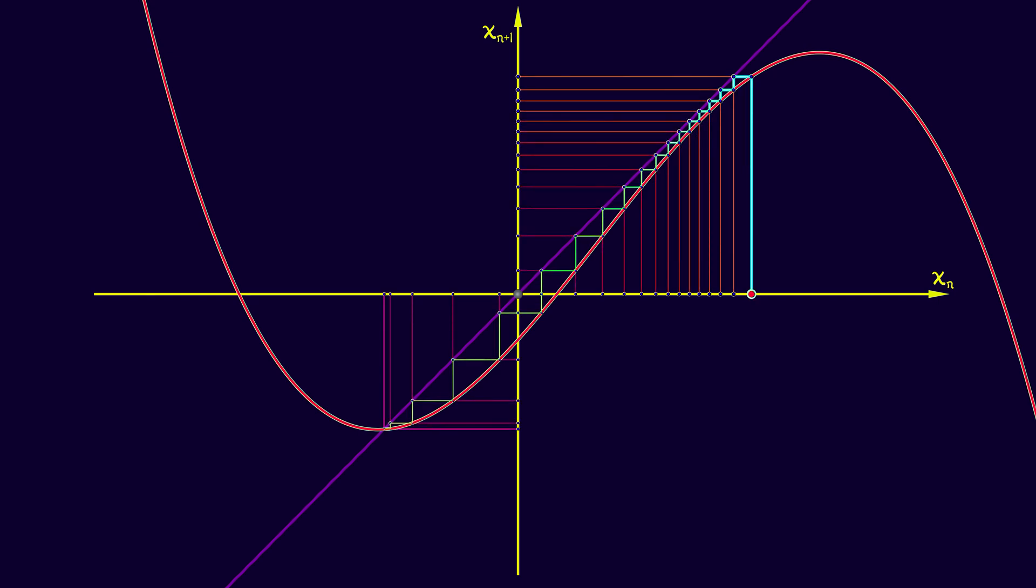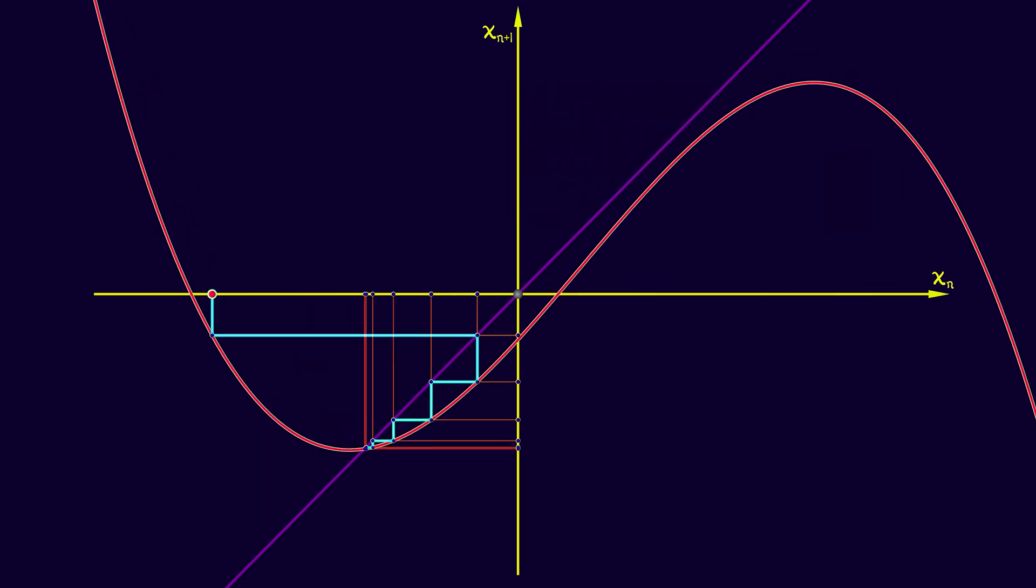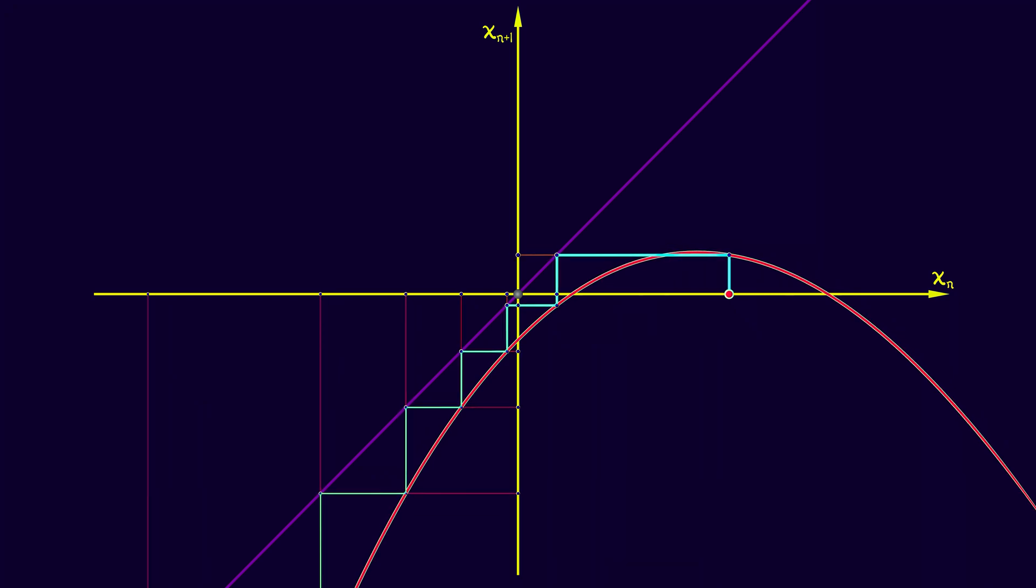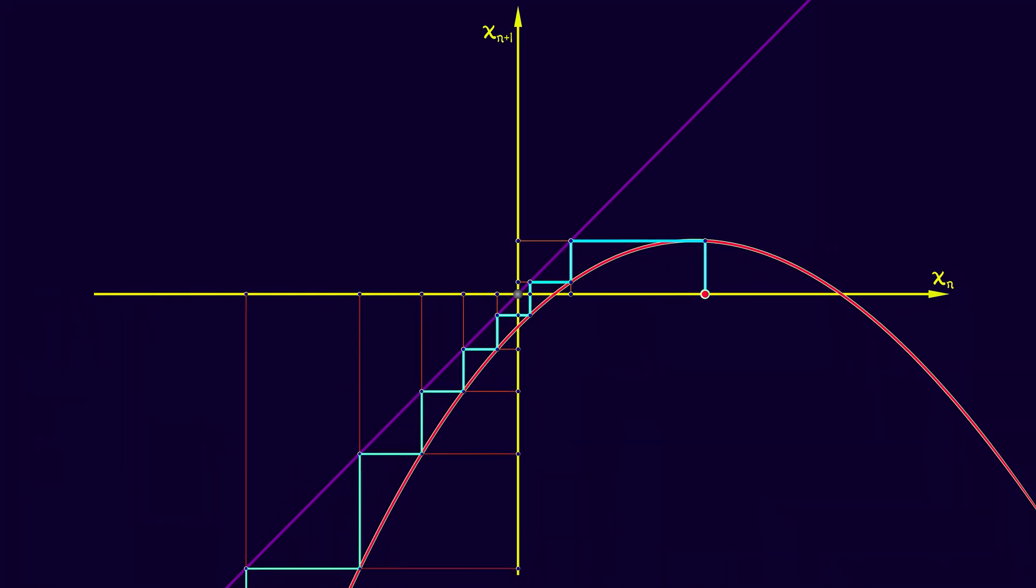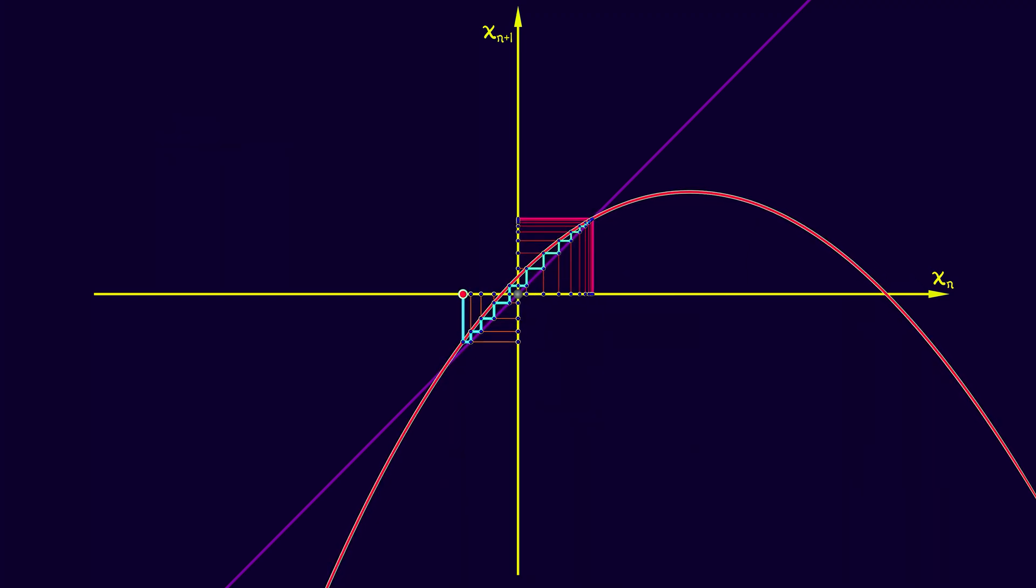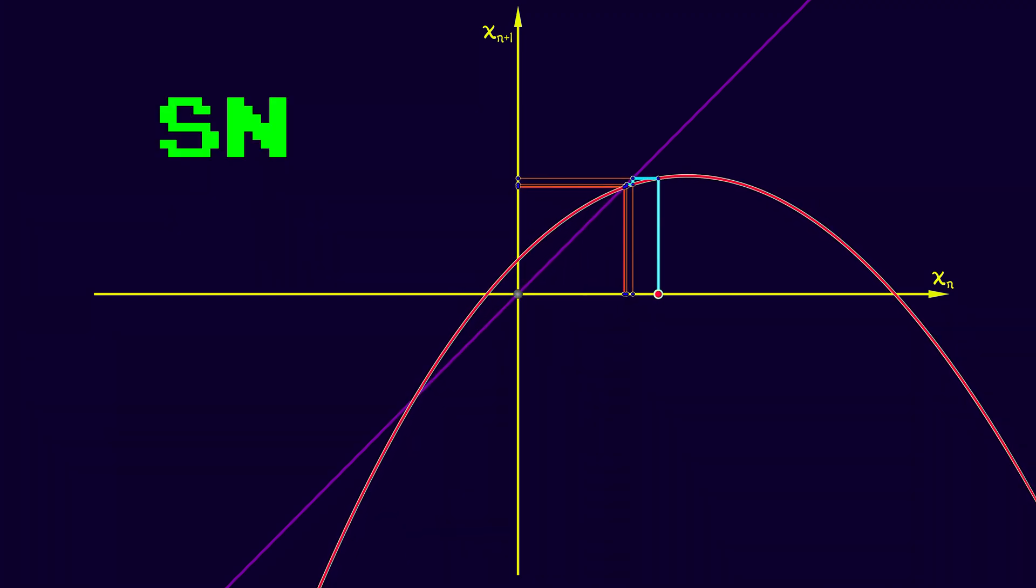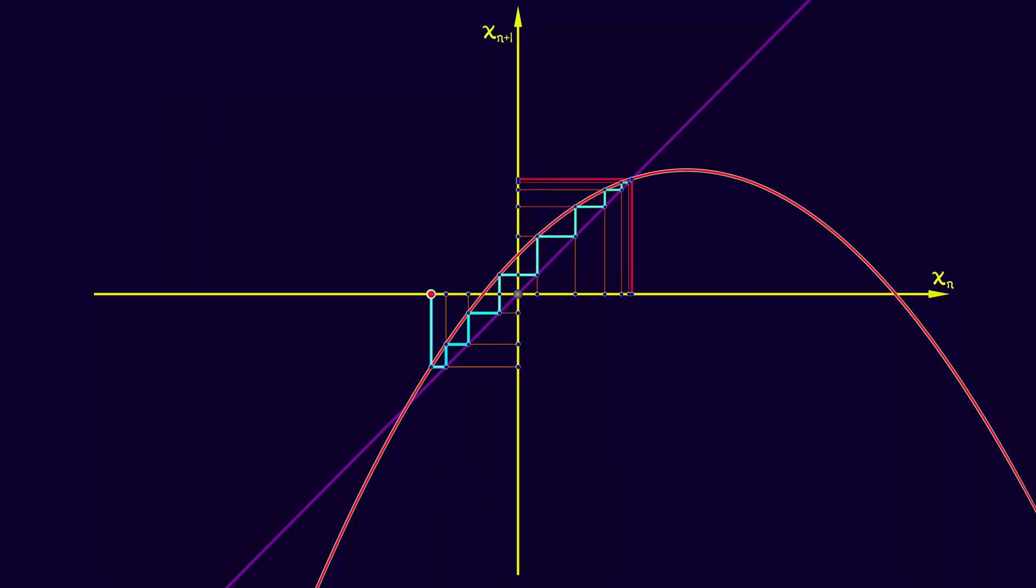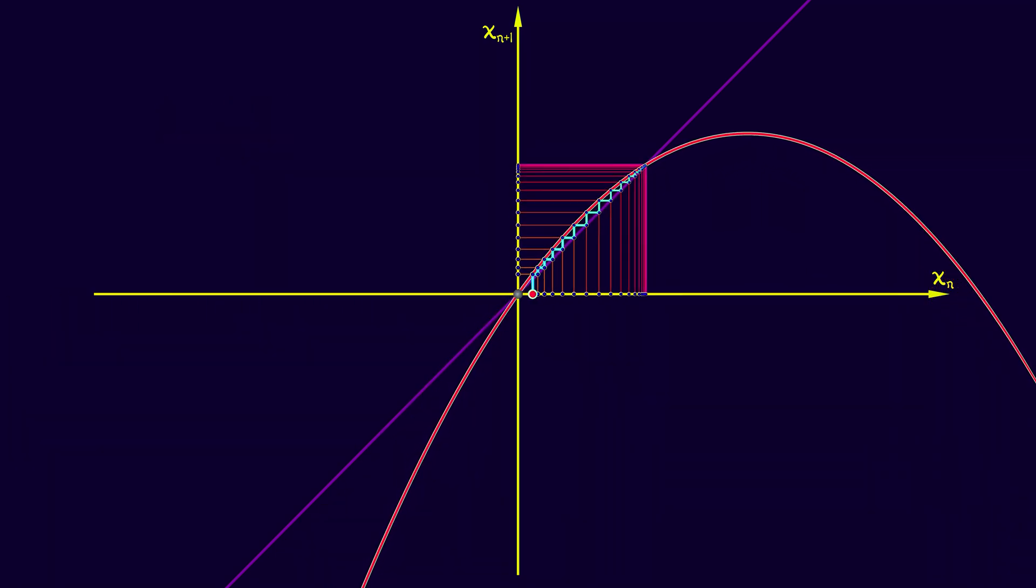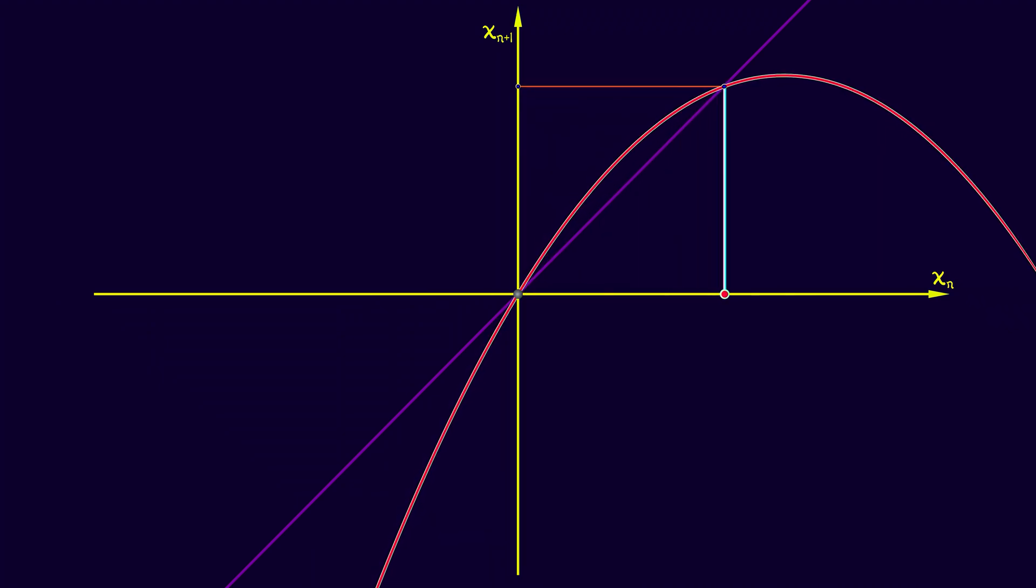So in a saddle node bifurcation, what you have is that on one side of the bifurcation, there are no equilibria. You just bounce away. And then as you pass through the bifurcation, a pair of stable and unstable equilibria are born and emerge from that bifurcation point. That's the kind of thing that you can see in a visual representation.